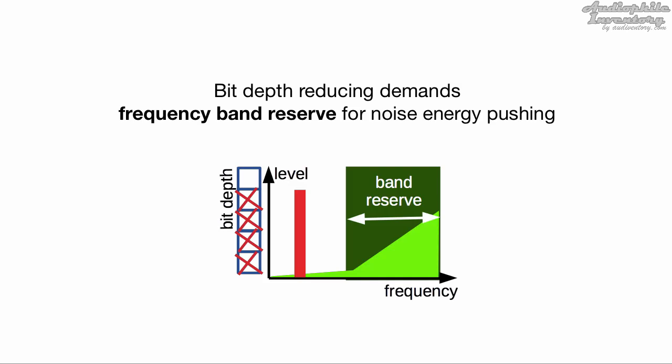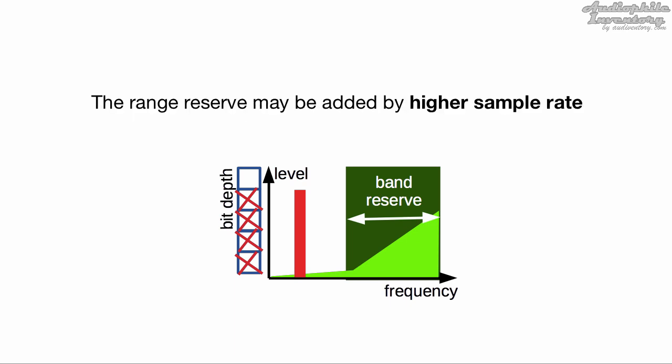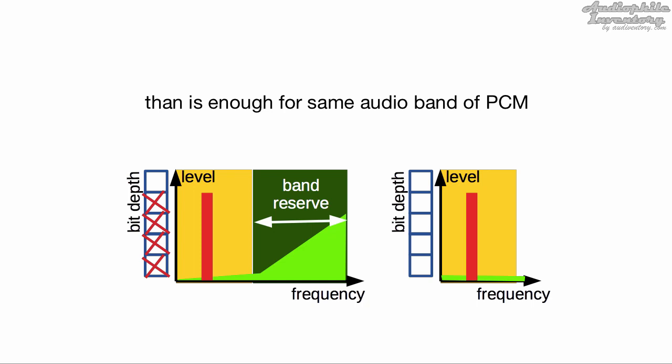Regarding sample rate: bit depth reduction demands a frequency band reserved for noise energy pushing. That range reserve may be added by a higher sample rate, compared to the same audio band of PCM.